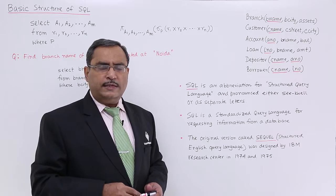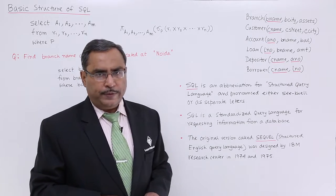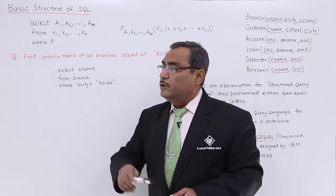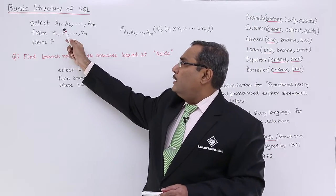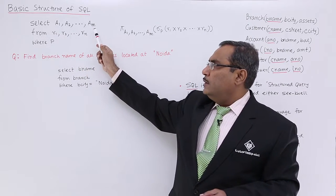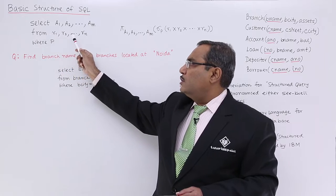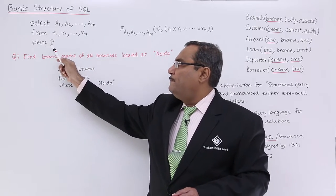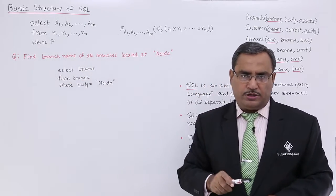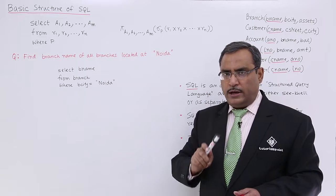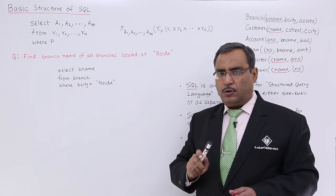Now let us go for the basic structure of SQL. The basic structure of SQL will be like this one: here SELECT A1, A2, dot dot dot Am, FROM R1, R2, dot dot dot Rn, WHERE P. This is the basic structure. SELECT, FROM, WHERE—they should come in this particular order in the SQL.